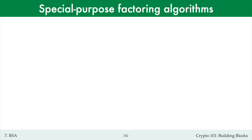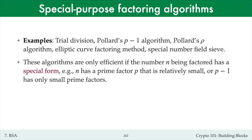I'll next briefly summarize the state of the art in integer factoring algorithms. Briefly speaking, there are two kinds of factoring algorithms: special purpose and general purpose. Special purpose factoring algorithms are only efficient if the number n being factored has a special form. For example, n has a prime factor p such that p minus 1 has only small prime factors, or n has a prime factor p that is relatively small. For example, trial division is only efficient if n has a relatively small prime factor.